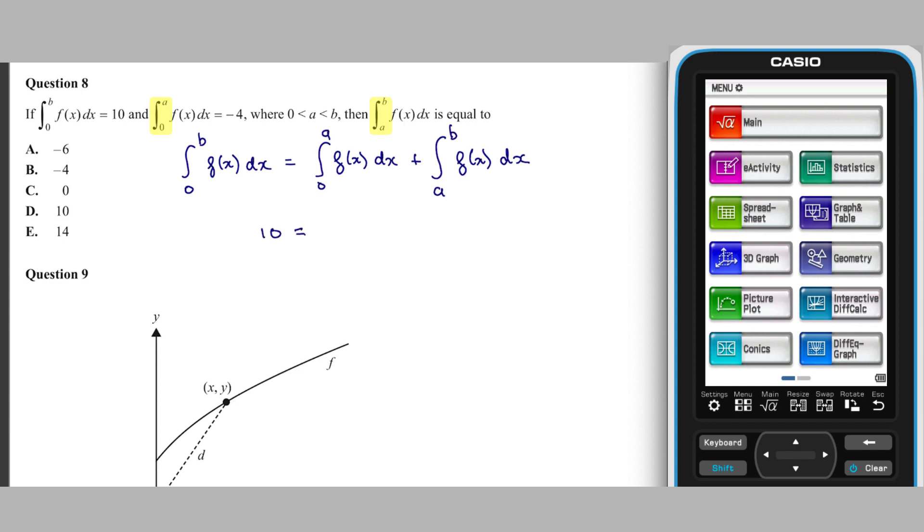After substituting in the values that we are given with a little rearranging, this relationship tells us that the integral from a to b of f of x is equal to 10, take minus 4, which is 14, and so the answer is e.